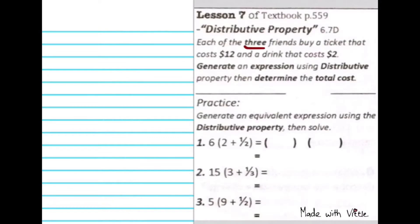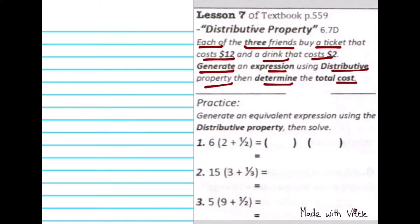Each of the 3 friends buys a ticket that costs $12 and a drink that costs $2. So in this situation, each ticket costs $12 and each drink costs $2, and each one of them is buying a drink and a ticket. Our job is to generate an expression using distributive property, then determine the total cost.